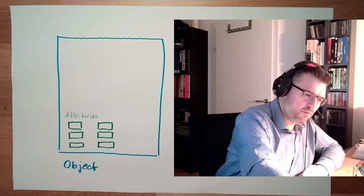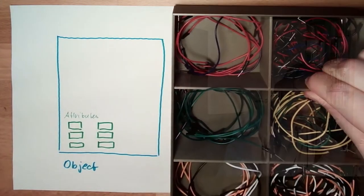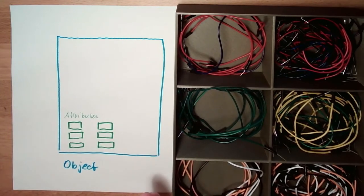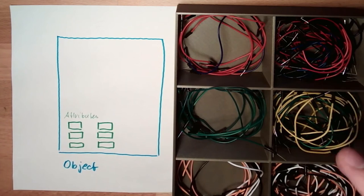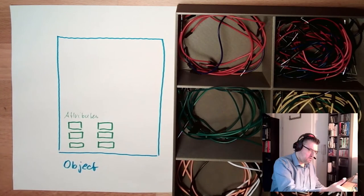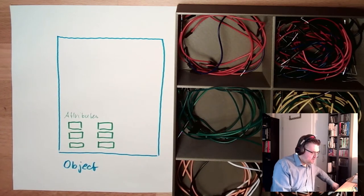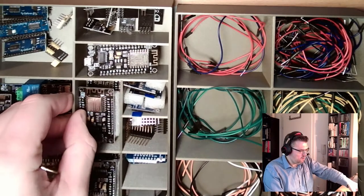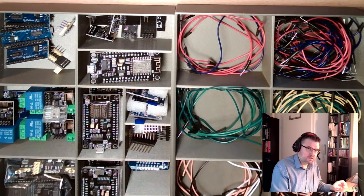For instance, here my box. If I would see my box as an object, one attribute would be broad, length, height, number of elements or compartments. Then if I do have another box, I have a different number of compartments maybe.